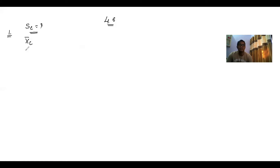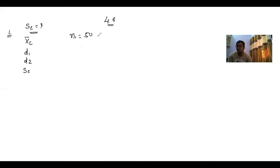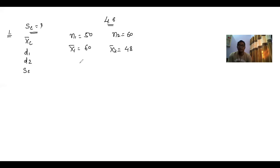Step by step: first find x̄c, then find d1 and d2, then apply the formula for SC. The data provided is: Division A has n1 = 50 students, Division B has n2 = 60 students. Mean marks: x̄1 = 60, x̄2 = 48. Standard deviations: s1 = 10, s2 = 12.